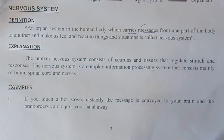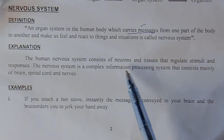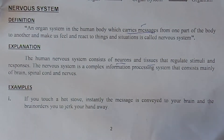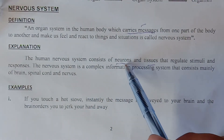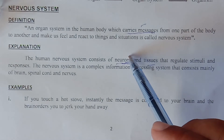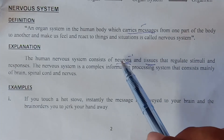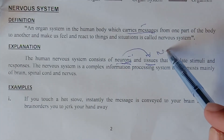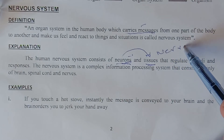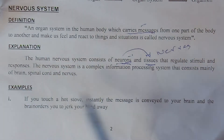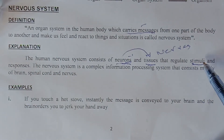The human nervous system consists of neurons and tissue that regulate stimuli and responses. Neurons are special cells responsible for carrying messages. The nervous tissue is made of neurons, which form nerves. Nerves regulate — meaning activate — responses. Stimuli means sensation.